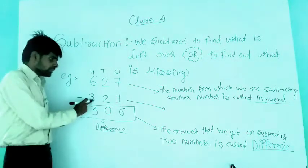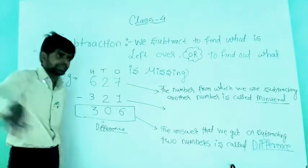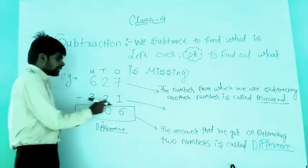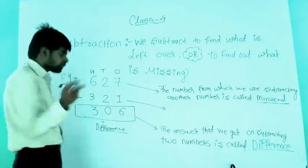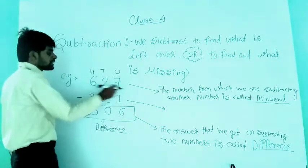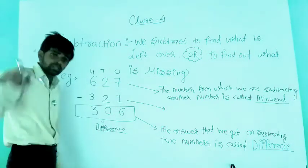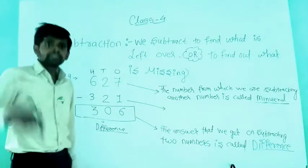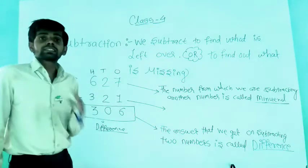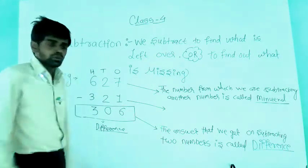The number which is subtracted from 627 — the one we subtract — is called the subtrahend.